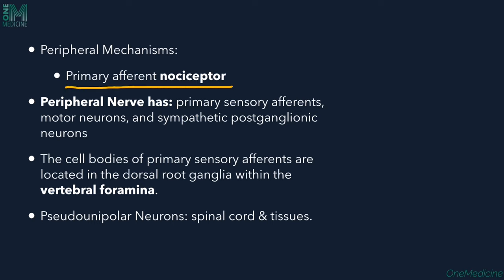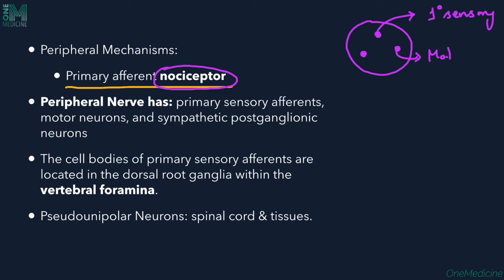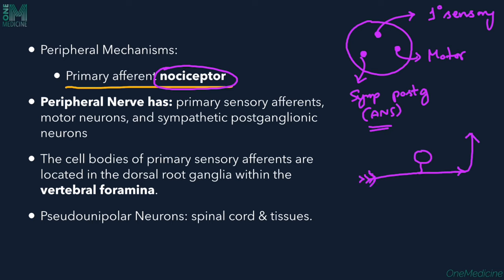The peripheral afferent nociceptor is the receptor responsible for carrying pain. When we look at a cross-section of the peripheral nerve, we get three different types of nerves: primary sensory afferents, motor neurons, and sympathetic post-ganglionic neurons. The primary sensory afferents have their cell body in the pseudo-unipolar dorsal root ganglion — one side going into the spinal cord, the other innervating the skin and tissues where pain is carried.